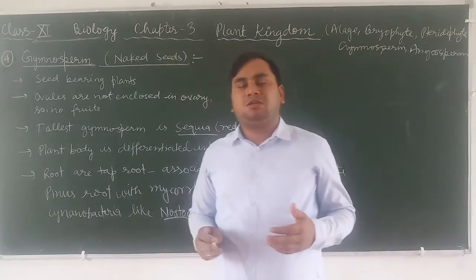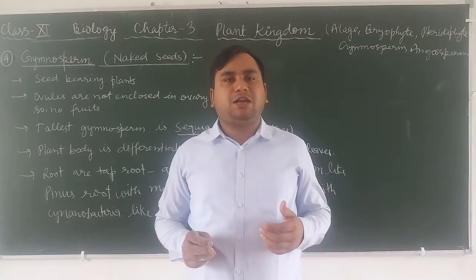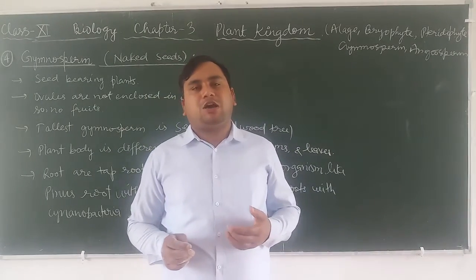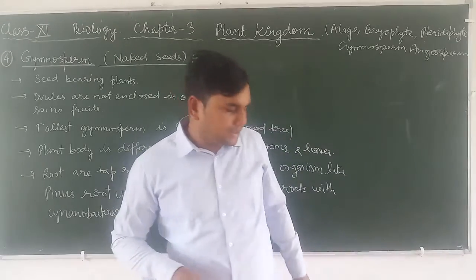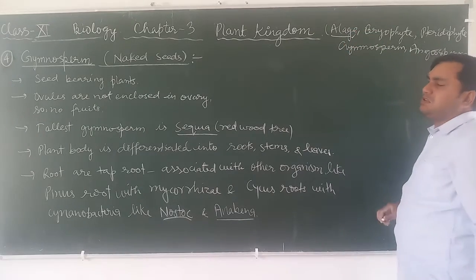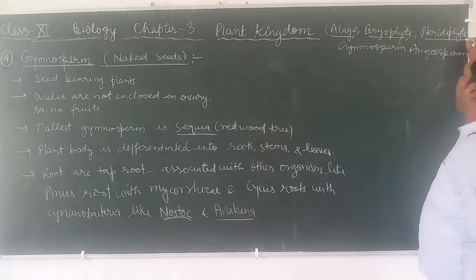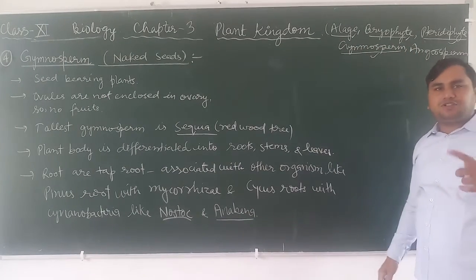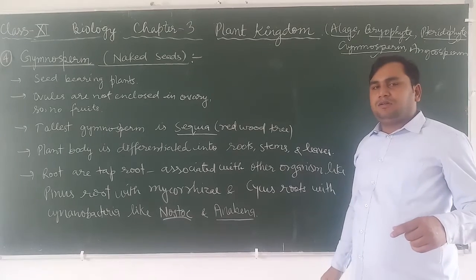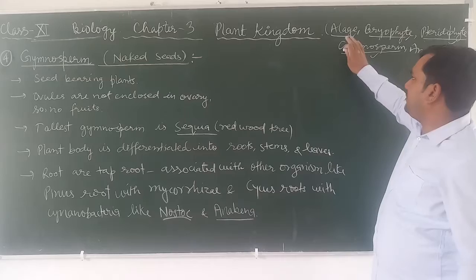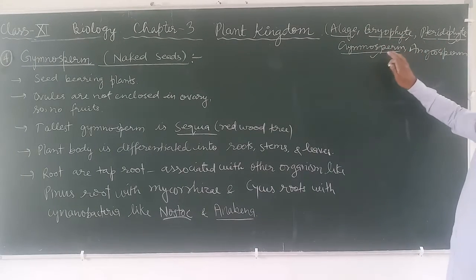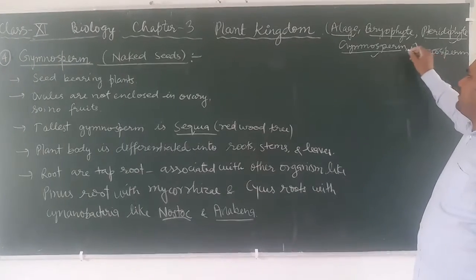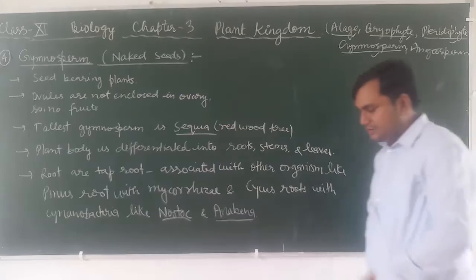Hello, dear students. Welcome to Biology Class 11, Chapter 3: Plant Kingdom. In this chapter we study different types of the plant kingdom, subdivided into algae, bryophyta, pteridophyta, gymnosperm, and angiosperm. We have already learned about algae, bryophyta, and pteridophyta. For this year's syllabus we will learn algae, bryophyta, pteridophyta, and gymnosperm in detail, and I will give a general introduction about angiosperm. Today I am going to describe gymnosperm in detail.